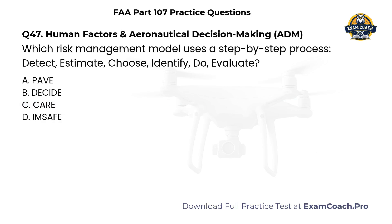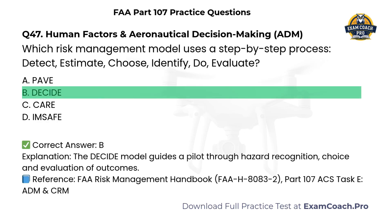Human Factors and Aeronautical Decision-Making. Which risk management model uses a step-by-step process: Detect, Estimate, Choose, Identify, Do, Evaluate? A. PAVE. B. DECIDE. C. CARE. D. I'M SAFE. Correct answer: B. DECIDE. The DECIDE model guides a pilot through hazard recognition, choice, and evaluation of outcomes.